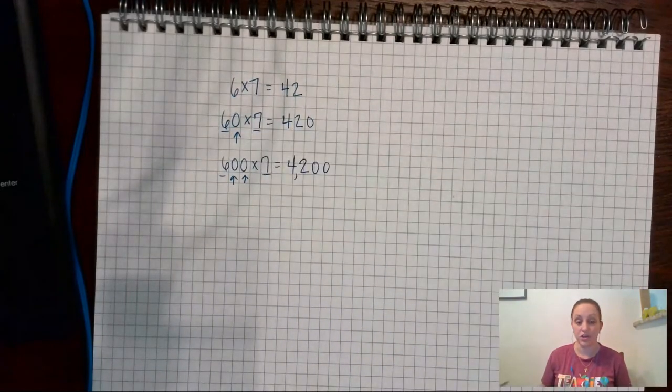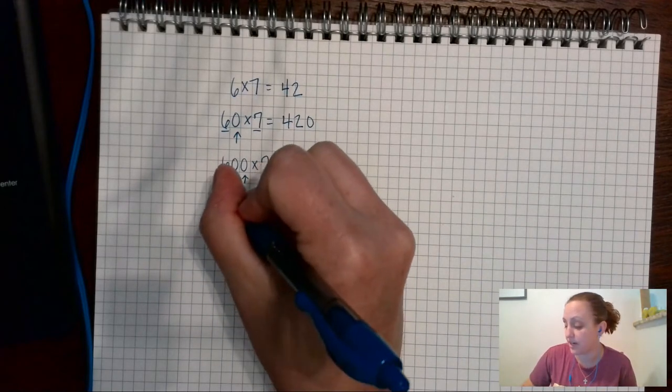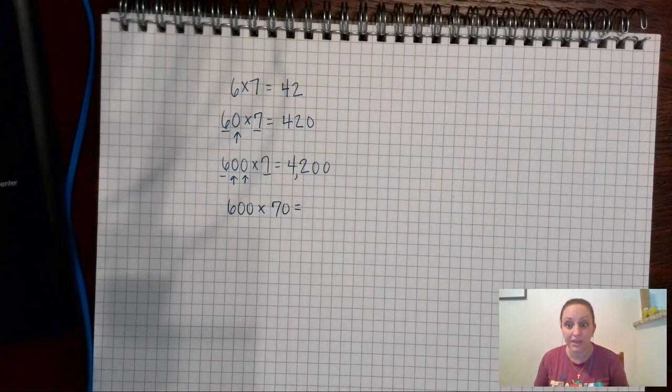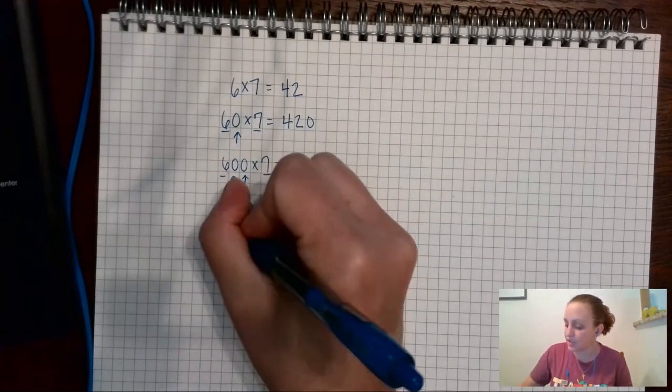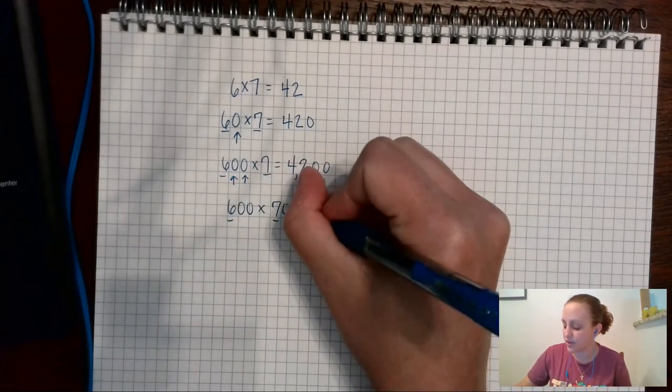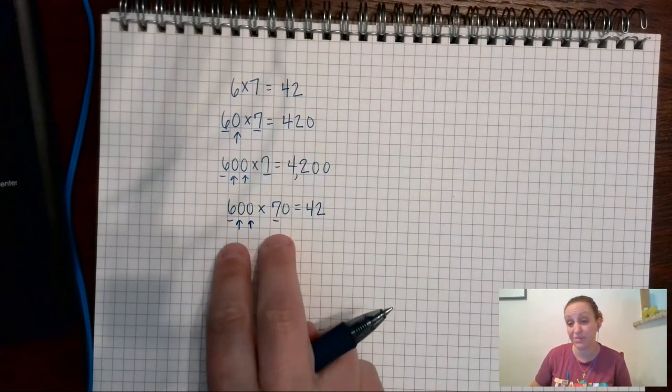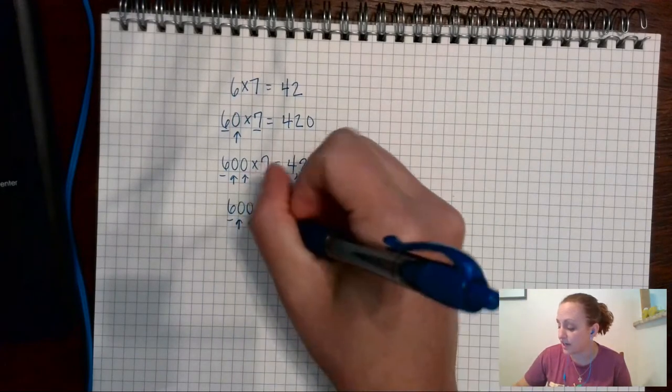So I'm going to add two zeros to the end and I have 4200. I could add zeros to the end of both of my numbers. I could have 600 times 70. Whoa, big numbers right? But I'm still doing 6 times 7 is 42 and now I'm going to count my zeros on both of my factors.